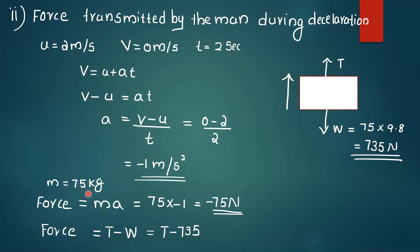The man has mass 75 kg. Force equals mass times acceleration equals 75 into minus 1, equal to minus 75 Newton. Weight of man W equals 75 into 9.8 equals 735 Newton.